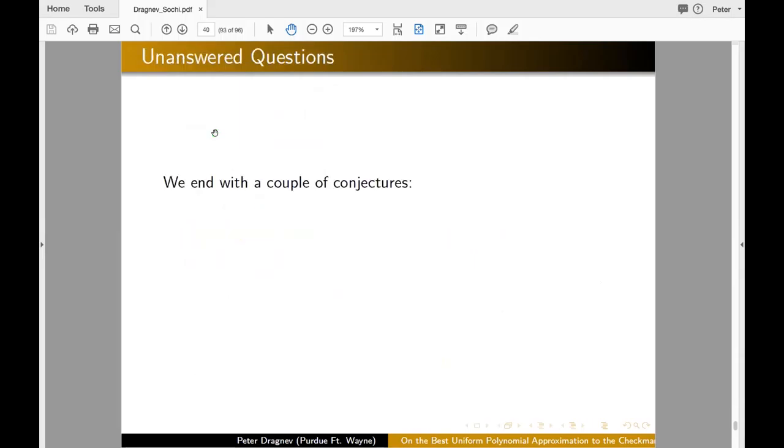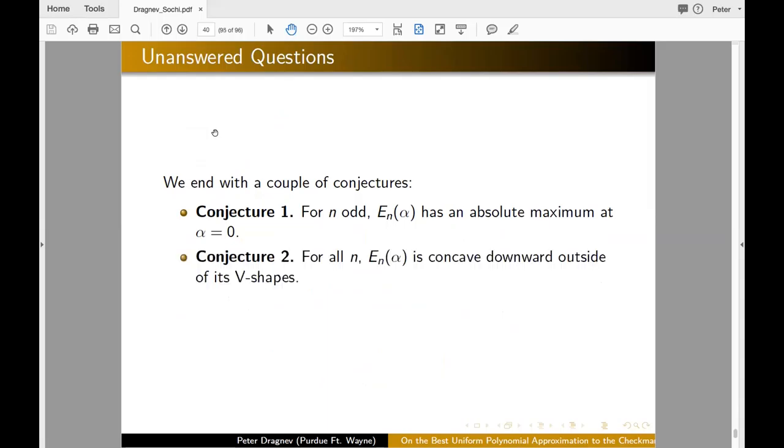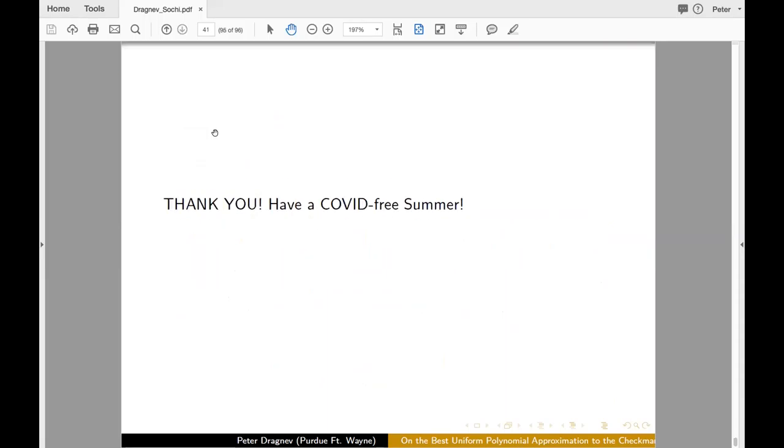And with this, I want to formulate couple of conjectures, things that we were not able to complete. Namely, the E_n alpha is actually the absolute maximum at zero because absolute maximum at zero. And that is tied up to the second conjecture. The E_n alpha is concave downward outside of its V shapes. And with this, I want to thank you and wish you a COVID free summer.